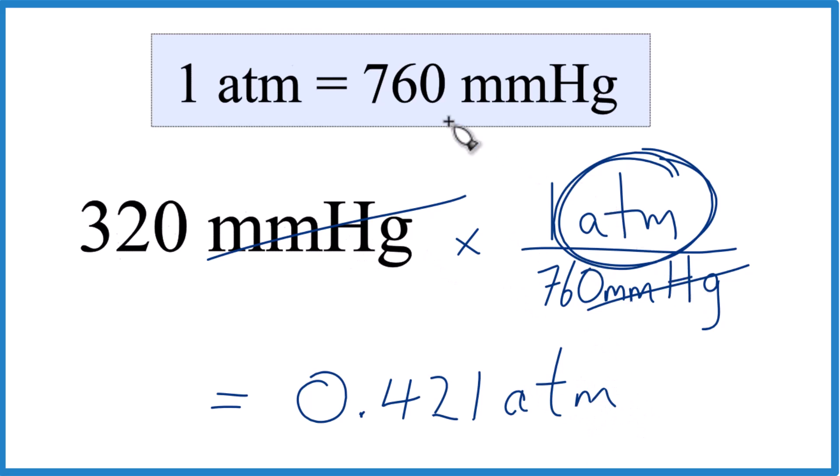We know we did it right. It's Dr. B, converting 320 millimeters of mercury to atmospheres. Thanks for watching.